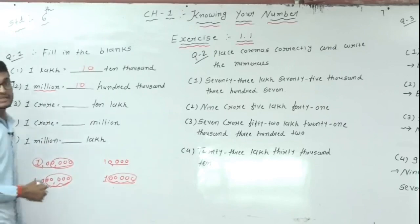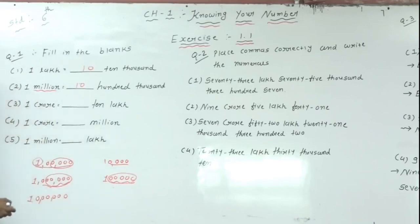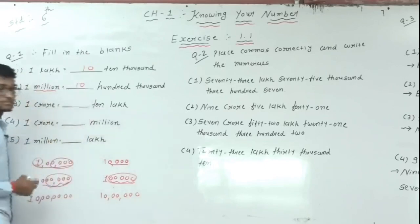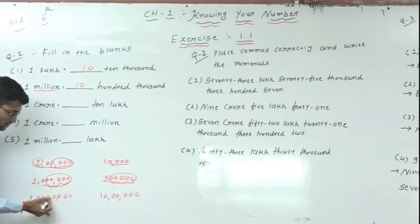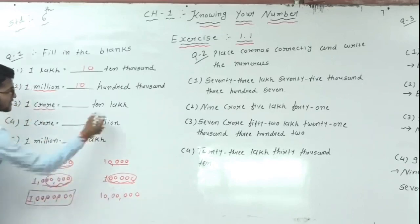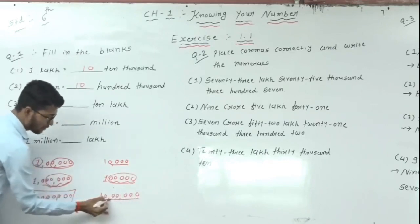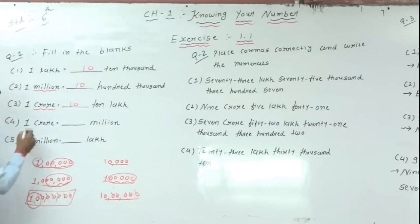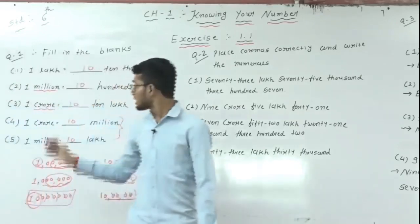Same for: 1 crore is equal to how many 10 lakhs? 1 crore has 7 zeros; count: 1, 10, 100, 1000, 10,000, lakh, 10 lakh, crore — that is 1 crore. And 10 lakh also has 6 zeros. So here 6 zeros and there 7 zeros — the answer is 10. So 1 crore is equal to 10 × 10 lakh. Same for 1 crore equal to how many millions — the answer is also 10. For these last two, try yourself; both answers are 10.